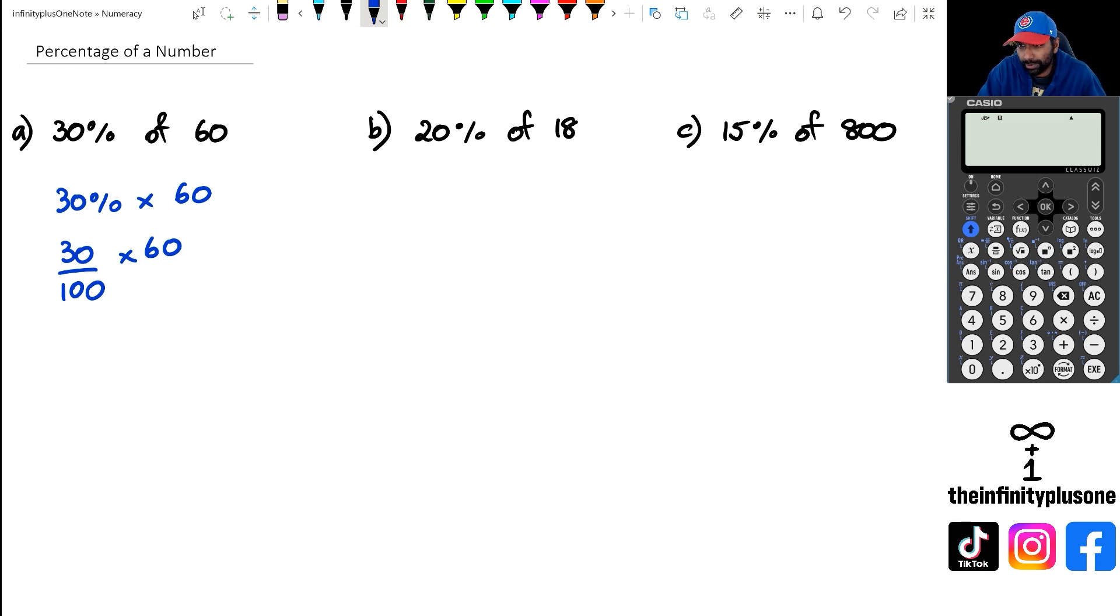What I'm going to do in this case is I'm actually going to get rid of the zeros. Think about it like this: 30 times 60 is 1,800 and then I've got 100 in the denominator. Basically I've got 1,800 divided by 100.